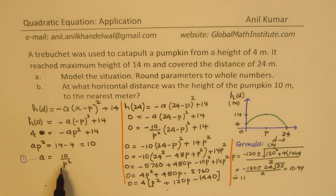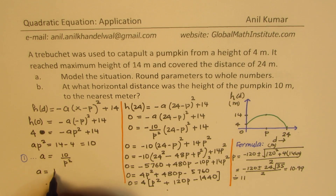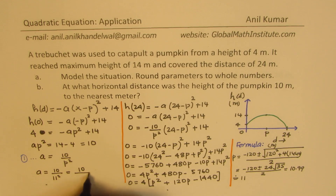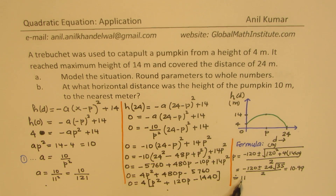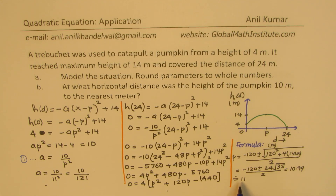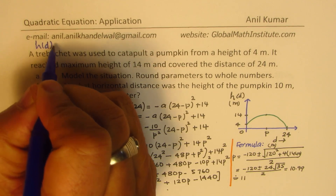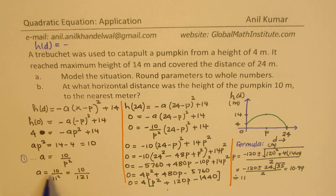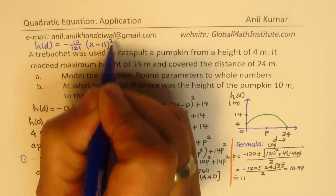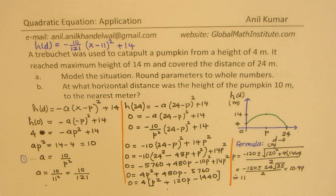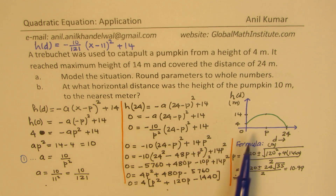So the value of P is 11. Substituting P equals 11, we get A equals 10 over 11 squared, which is 10 over 121. Writing down our equation using these two values, A equals 10 over 121 and P equals 11, we get H(D) equals minus (10 over 121) times (x minus 11) squared plus 14. That is how we get our quadratic equation which represents the parabolic path of the pumpkin.